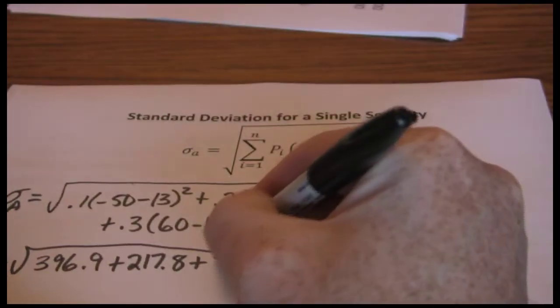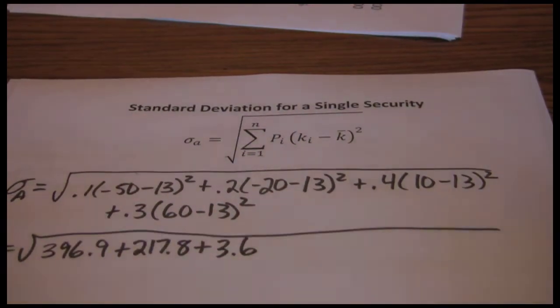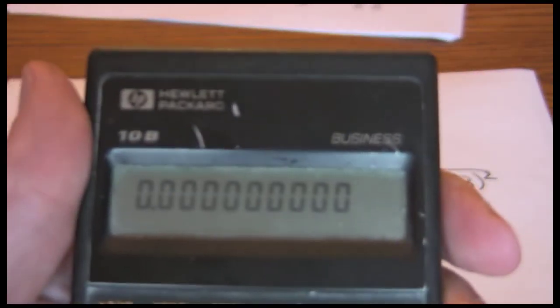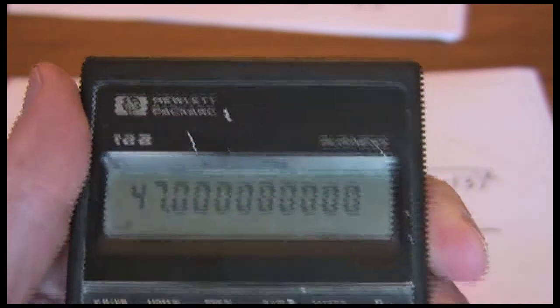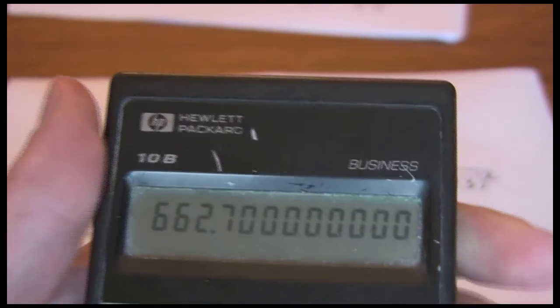Ten minus thirteen squared times .4. Sixty minus thirteen squared times .3 is 662.7.